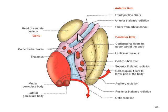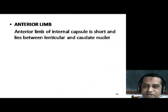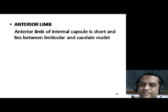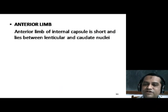The nuclei of the hypothalamus are divided mainly into three groups: one is the anterior or preoptic group of nuclei, the second is the middle or tuberal group of nuclei, and the third is the posterior or mammillary group of nuclei.